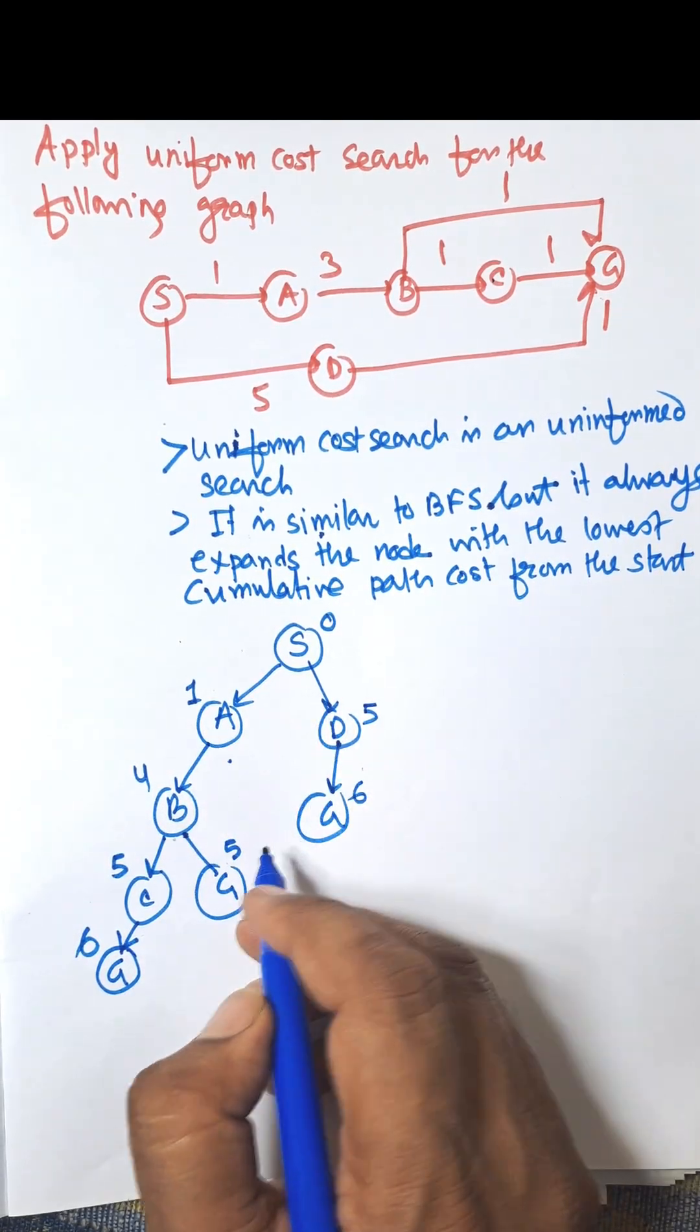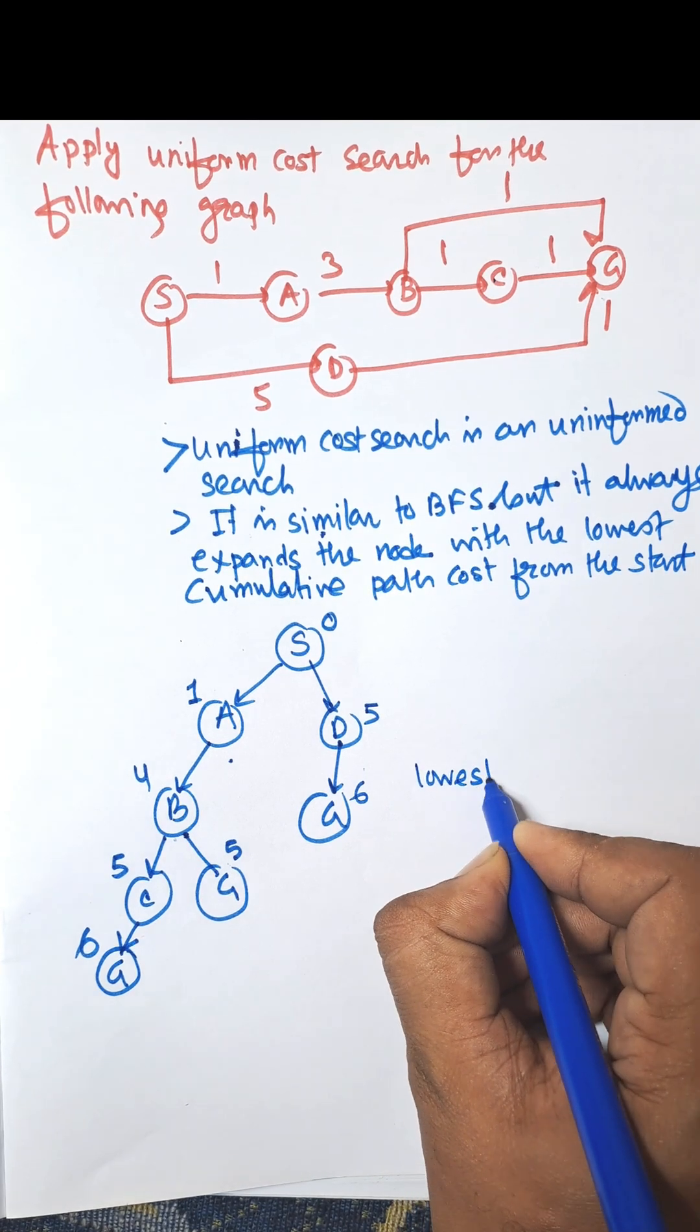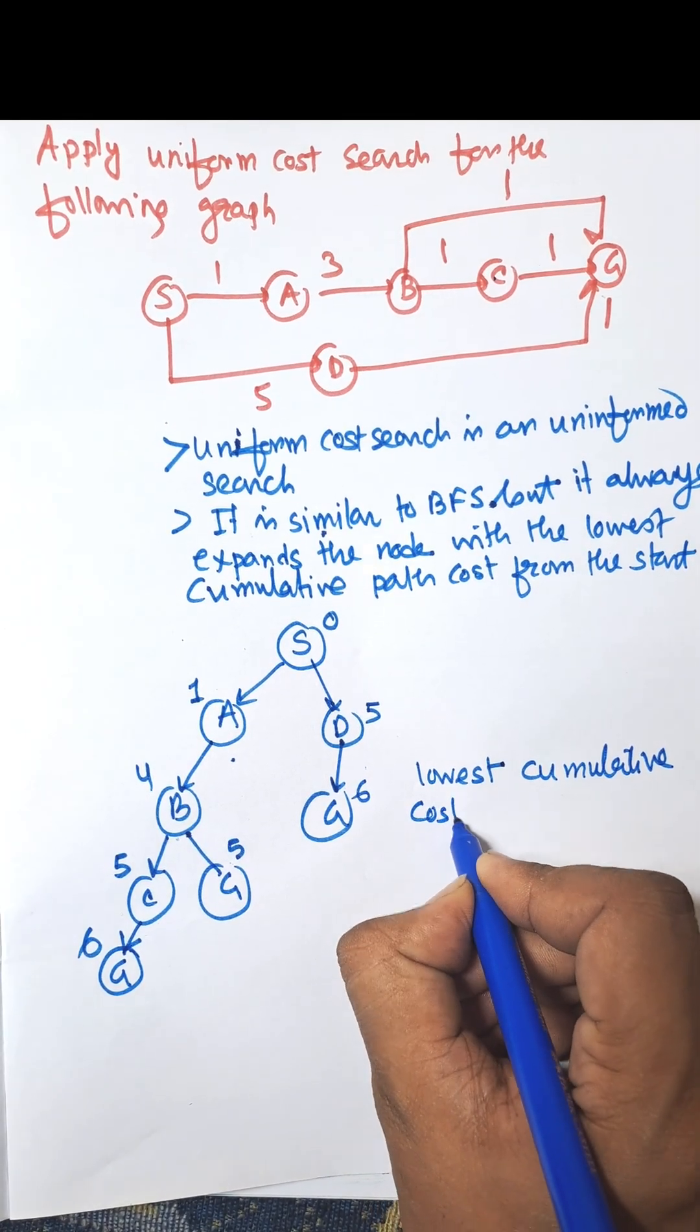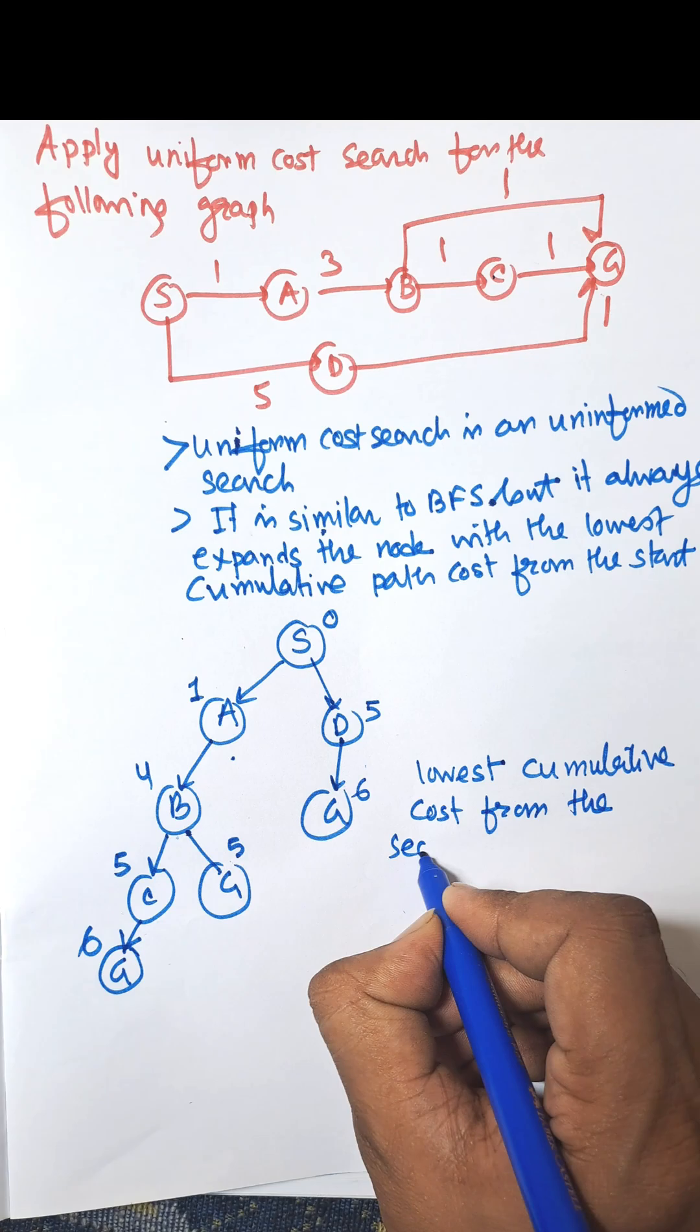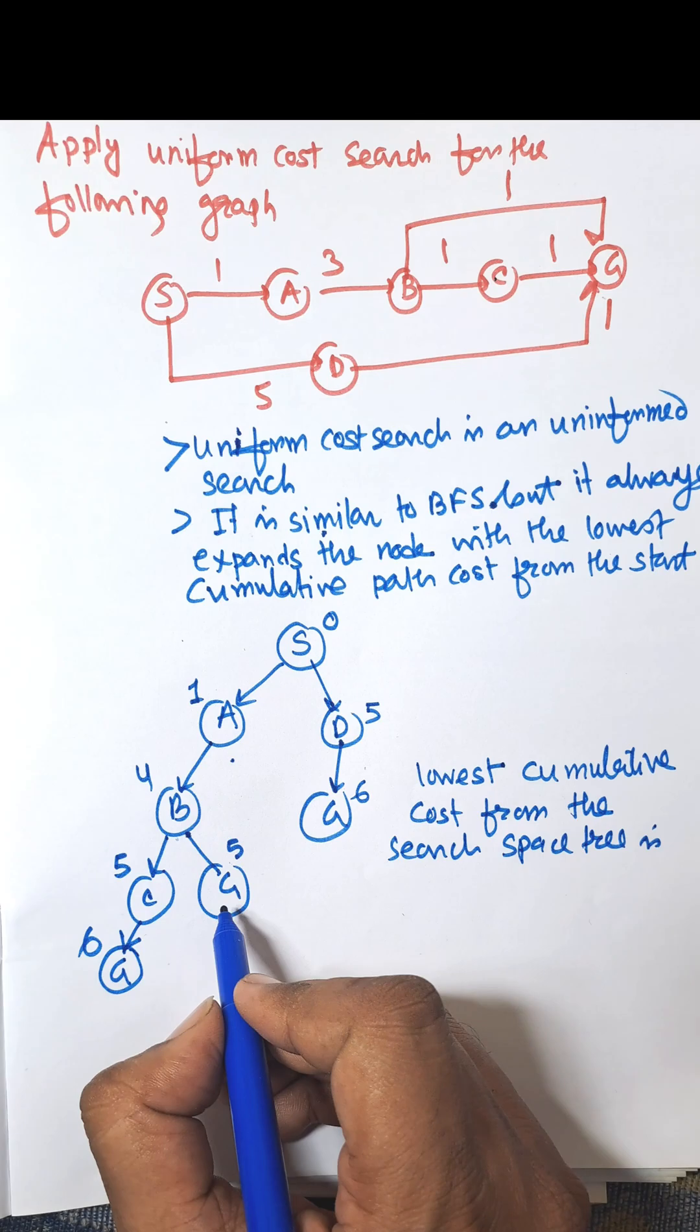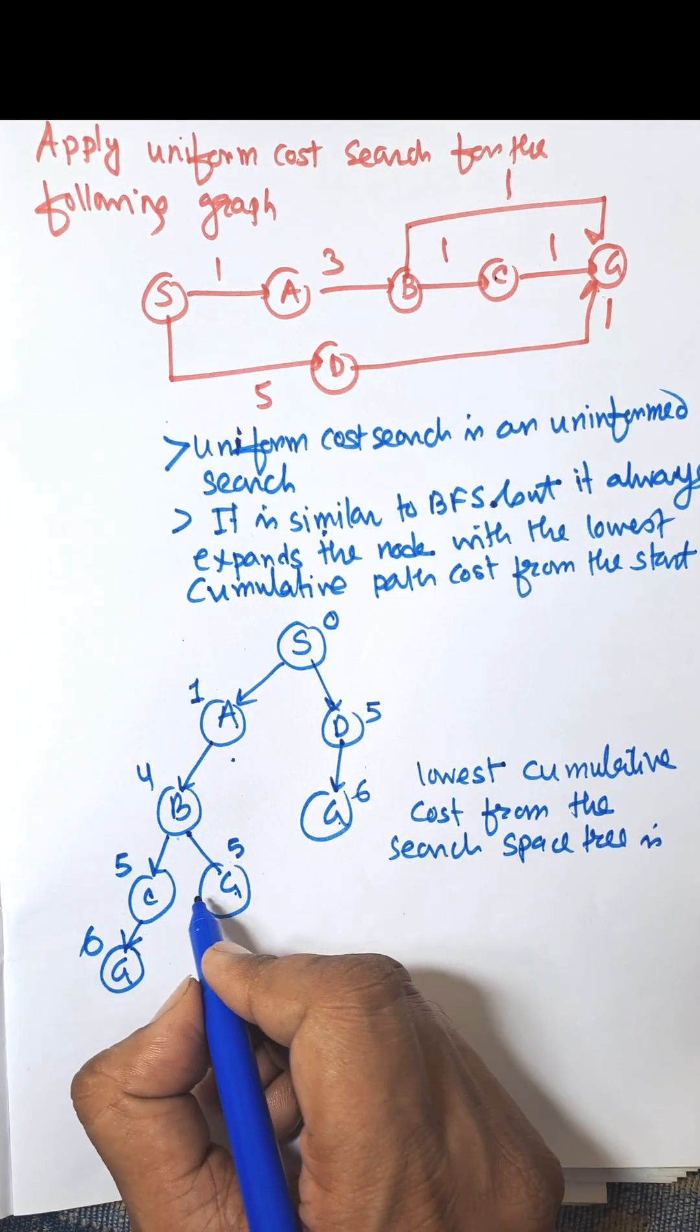Now, the lowest cumulative cost from the search space tree. The lowest cumulative cost is from starting to G. These are 5, 6, and 6. So minimum is 5.